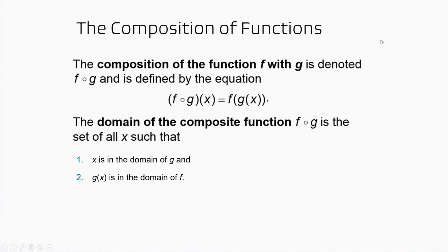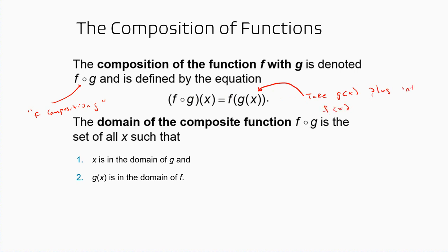Now let's talk about the composition of functions. The composition of f with g is denoted f∘g — you read this as 'f composition g.' It's defined so that (f∘g)(x) means you take g(x) and plug it into f(x). The domain of the composite function f∘g is the set of all x such that x is in the domain of g, and g(x) is in the domain of f.